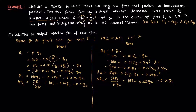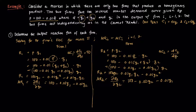For both firms, marginal cost is just the derivative of the respective cost function with respect to each quantity. Since C1 = 40Q1 and C2 = 40Q2, we get MC1 = 40 and MC2 = 40, reflecting their similar cost structure.